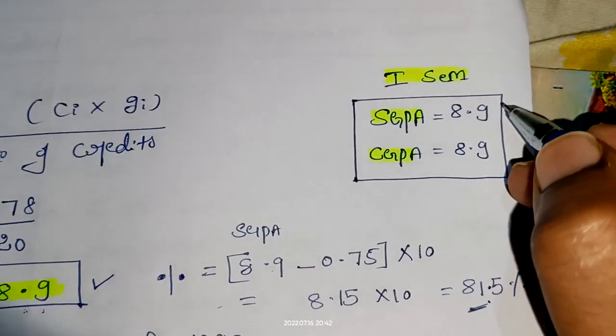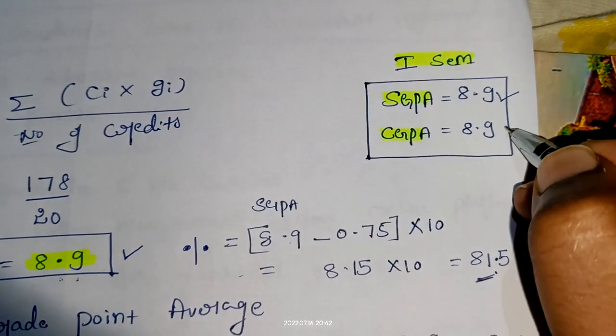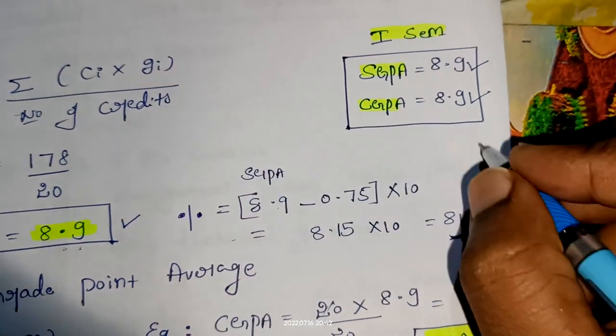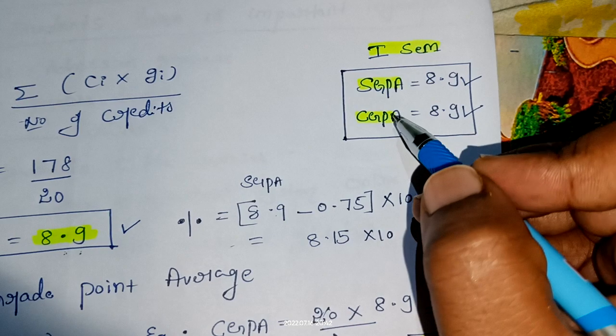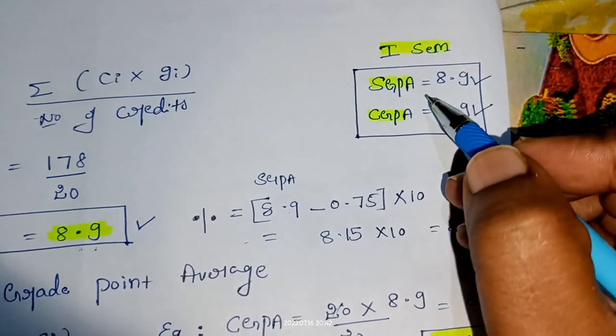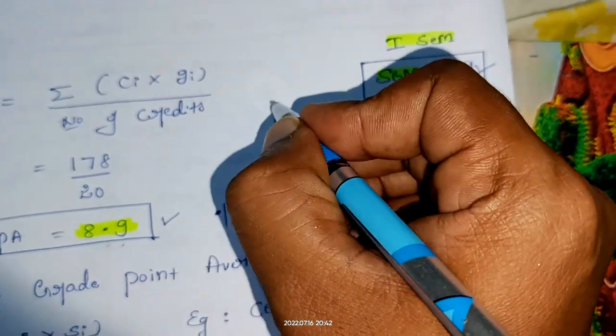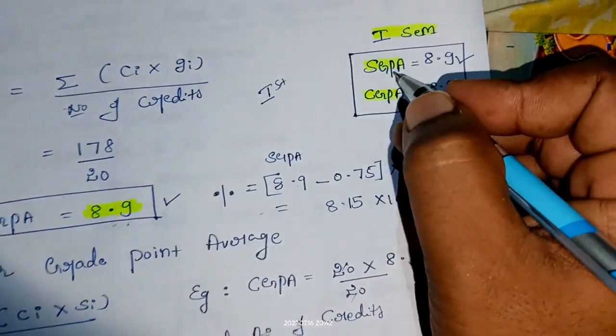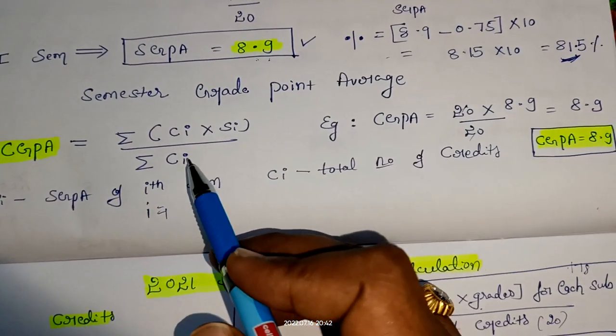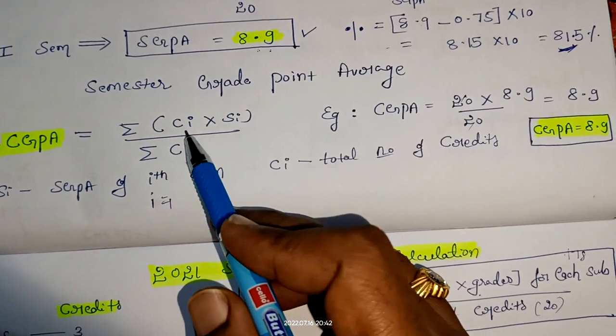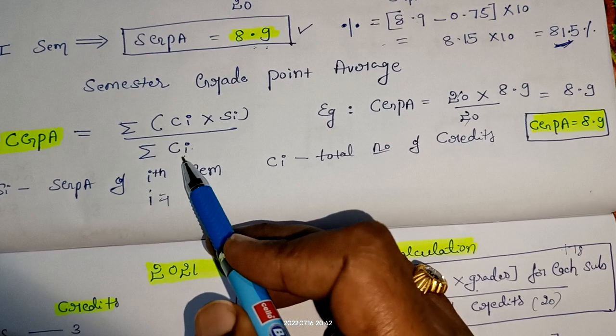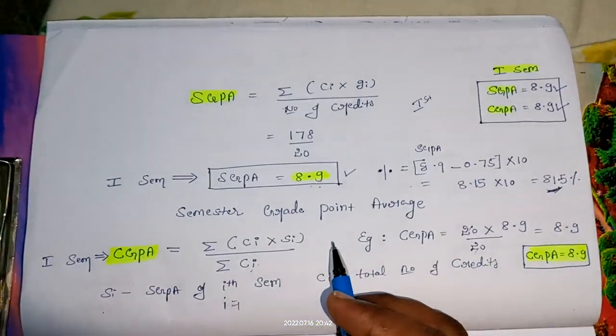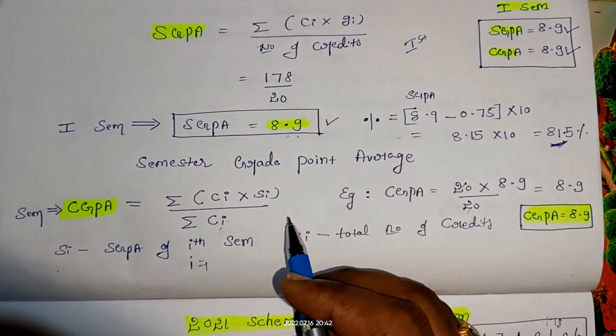For the first semester, SGPA is 8.9, CGPA is also 8.9, and percentage is 81.5. You can ask why SGPA and CGPA are the same. CGPA means cumulative. Since only first semester results are announced, this CGPA is exactly equal to SGPA. When the second semester goes on, the credit points will increase. Now only 20 is there, so that's why SGPA and CGPA become the same.